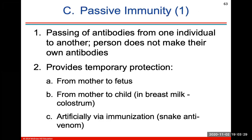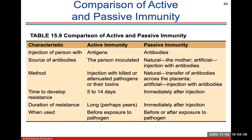Passive immunity is the passing of antibodies from one individual to another — the person does not make their own antibodies. This provides temporary protection from the mother to the fetus, from the mother to the child in breast milk and colostrum right when the baby is born, or artificially via immunization like snake antivenom. This table compares active and passive immunity, and I would really encourage you to understand it well, as there will probably be at least a couple of questions on the test covering time to develop resistance, duration, when it's used, and what you're injecting the person with.